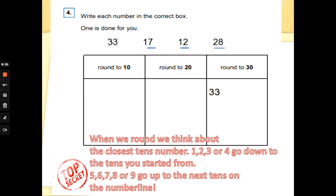Number four. Write each number in the correct box. One is done for you. So you've got the numbers thirty-three, but they've crossed that one out. That's just to show you what to do. Seventeen, twelve, and twenty-eight. And we've got to put them in the boxes if it rounds to ten, rounds to twenty, or rounds to thirty. Now we've thought about rounding in class. When we round, we think about which tens number is the closest. And it's the units that tell you here. So one, two, three, or four go down to the tens you started from. Five, six, seven, eight, or nine go up to the next tens on the number line. So they've put thirty-three in rounds to thirty, because thirty-three is closer to thirty than it is to forty. Let's have a look at twelve. Is twelve closer to ten or is it closer to twenty? It's only got two ones, so we go back to the tens we've already got. And twelve has got one tens, so that means that we go back to ten. So twelve rounds to ten. And then we cross that out so we remember we've done it.